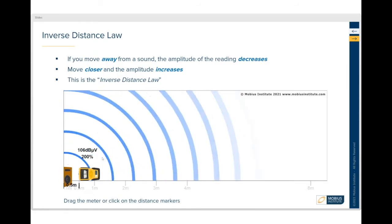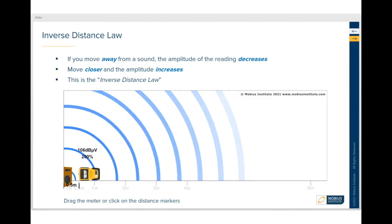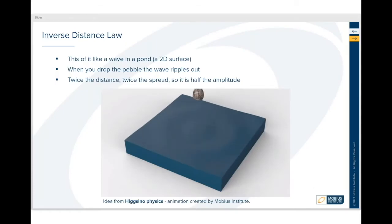To explain the half rule again, think of when you drop a little pebble in a pond. If we've doubled the distance from the center to the first ring and then double it to the second ring, the area has doubled, so therefore the amplitude is half. It's spread over twice the area.